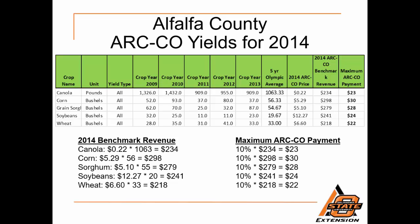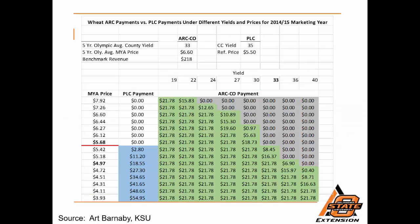33 bushels per acre multiplied by $6.60 gives a 2014 ARC County benchmark revenue of $218 per acre. 10% of that benchmark revenue equals a maximum payment per acre of $22 per acre. The detailed table calculating ARC County payments confirms the same five-year Olympic average county yield of 33 bushels and a five-year Olympic average marketing year average price of $6.60, giving a benchmark revenue of $218.